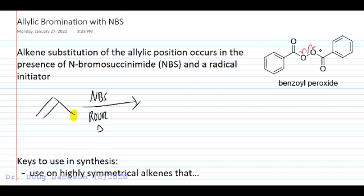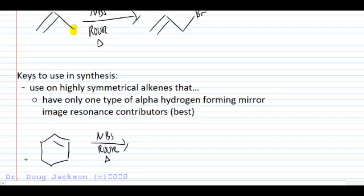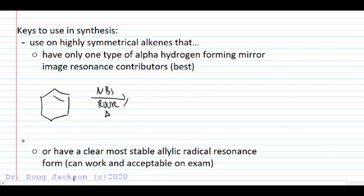You will form this single bromination product because of the symmetry of this alkene. A good reaction partner for this is propene. The keys to synthesis with NBS and your alkene is to use a highly symmetrical alkene that only has one type of alpha hydrogen next door in this allylic position.